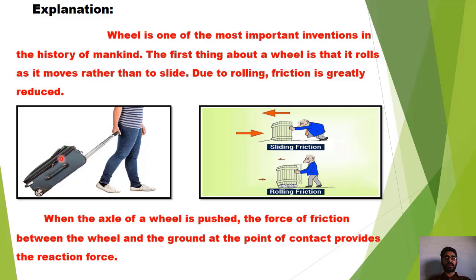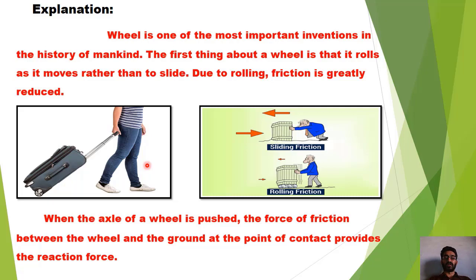یہاں پہ آپ دیکھ سکتے ہیں کہ ایک suit bag ہے جس کے نیچے wheel لگا ہوا ہے۔ اگر اس suit bag کے اندر کافی زیادہ سامان ہو تو ہمیں اس bag کو آگے move کروانے کے لیے اتنی زیادہ force نہیں لگانی پڑتی کیونکہ اس کے نیچے wheel لگا ہوا ہے اور rolling friction، sliding friction سے کم ہوتی ہے۔ اگر اس suit bag کے نیچے wheel نہ لگے ہوتے تو پھر اس bag کو آگے move کروانے کے لیے کافی زیادہ force لگانی پڑتی۔